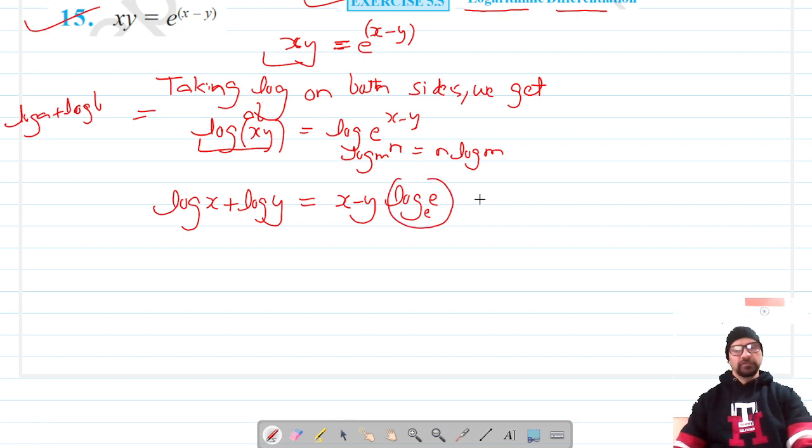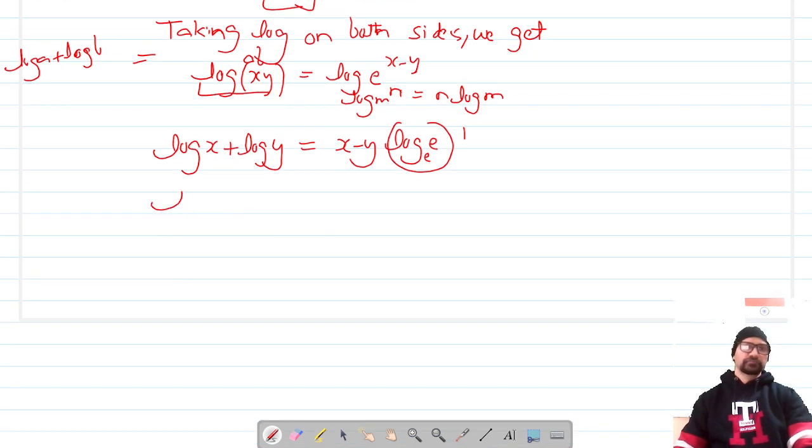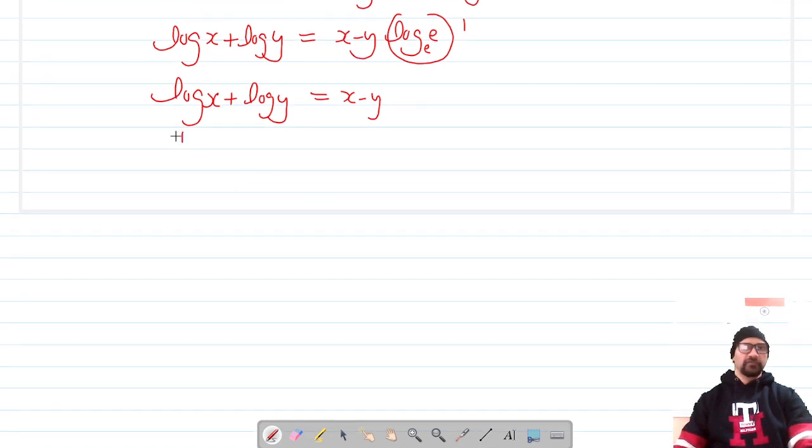Log e to the base e is 1, and finally we are left with log x + log y = x - y. We are ready to differentiate this with respect to x.